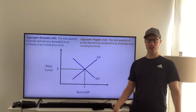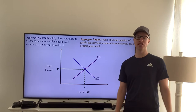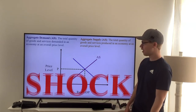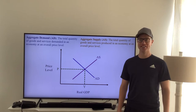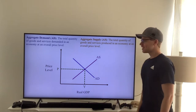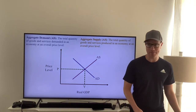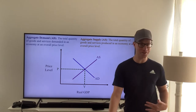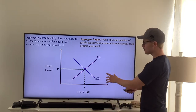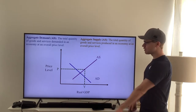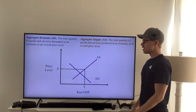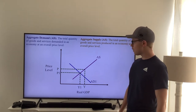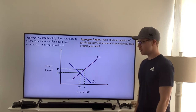Now, when a recession happens, the first thing that happens is a shock. After that shock happens, demand has now gone down. We're going to show that by moving our aggregate demand curve to the left, and we're going to find our new price and new GDP at P1 and Y1.